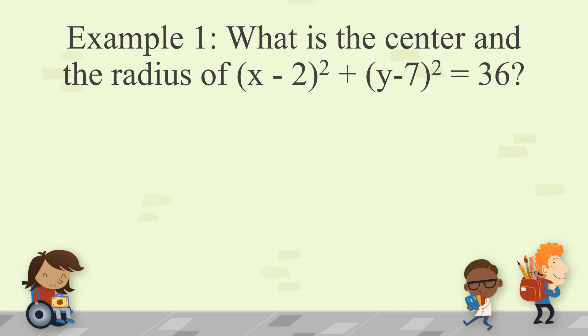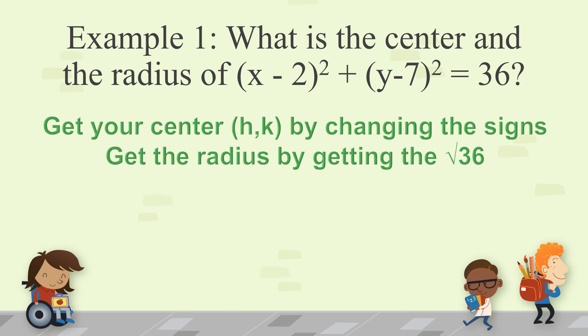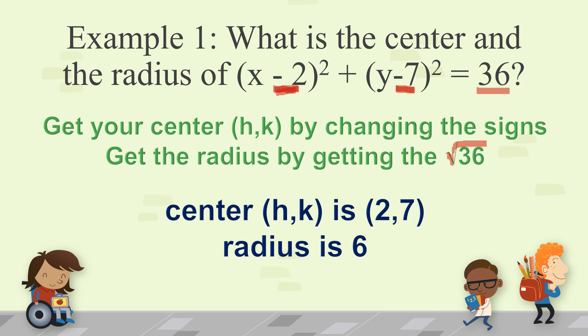Example number 1: What is the center and the radius of x minus 2 squared plus y minus 7 squared is equal to 36? To find the center, take the values inside — negative 2 and negative 7 — and change their signs. So h becomes positive 2 and k becomes positive 7, giving center (2, 7). For the radius, take the square root of 36, which is 6.